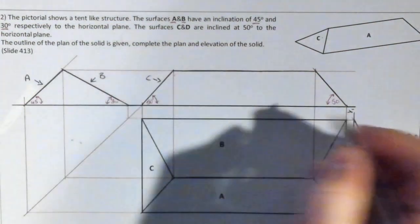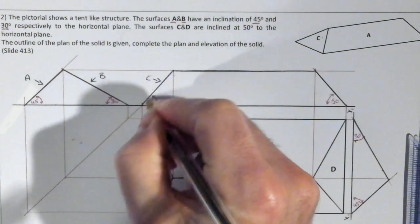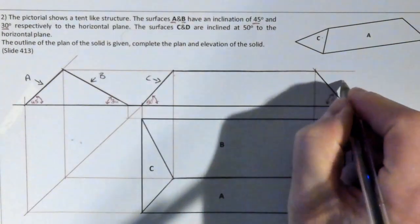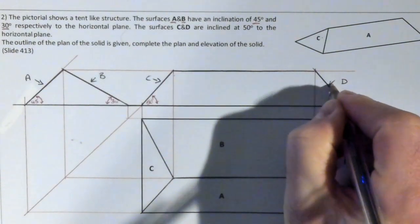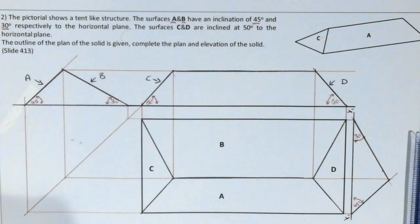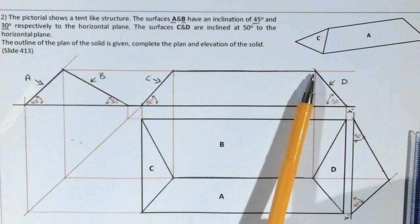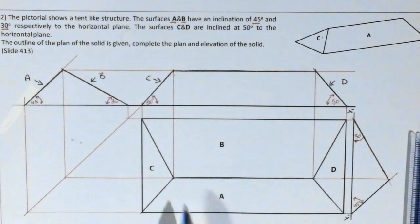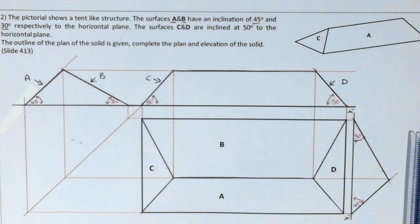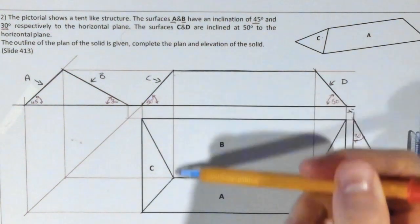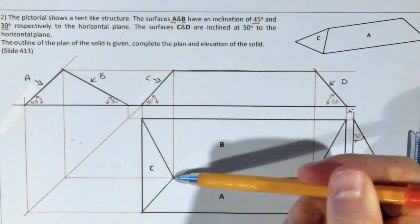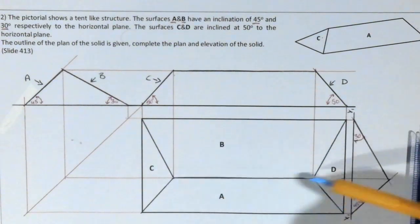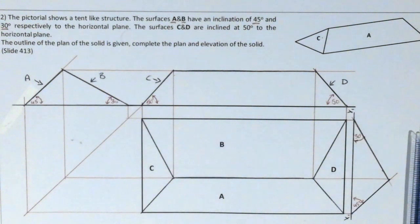Surface C is seen as an edge view in this view, and surface D is on the opposite side — both at 50 degrees. This gave us the actual cross points where surface C intersected surfaces B and A, and where D intersected A and B. Once we found those cross points, we located them in the plan view and completed the plan.